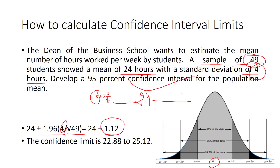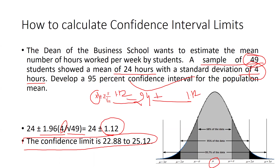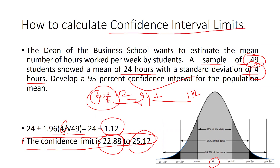Calculating the margin: 1.96 times 4 divided by 7 equals 1.12. So the confidence limits are 24 plus 1.12 and 24 minus 1.12, giving us final confidence interval limits of 22.88 and 25.12.